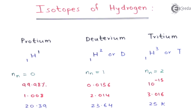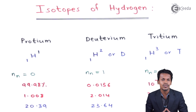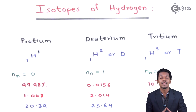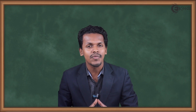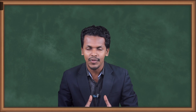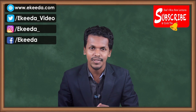So these are the isotopes of hydrogen. Thank you for watching this video. I hope you have understood the different isotopes of hydrogen — their names, abundances, and chemical reactivities. Please share this video with your friends and don't forget to subscribe.